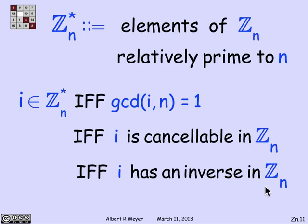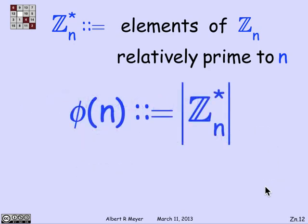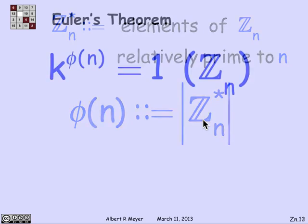All of these three things are equivalent. Z_n* is a kind of robust subset of Z_n that you want to be thinking about. What else do we know about Z_n*? The definition of phi of n was the number of integers in the interval from 0 to n that are relatively prime to n. Of course, that's exactly the size of Z_n*. So phi of n is simply the size of that collection of elements.